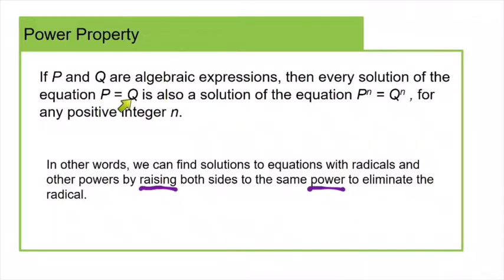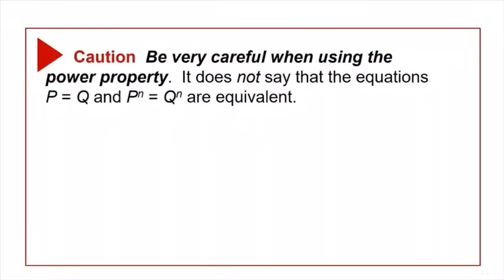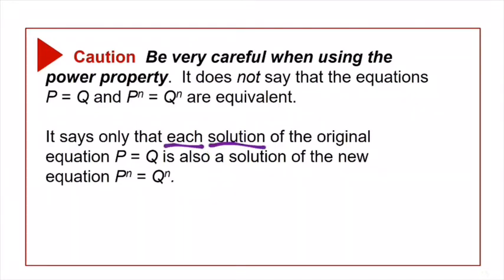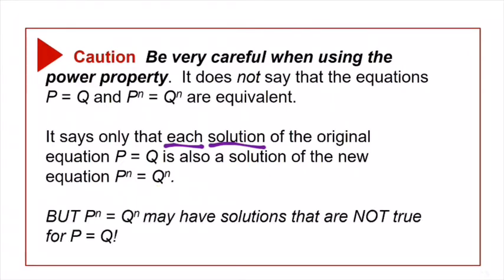If P and Q were both radical expressions and we square both sides of the equation, that's going to get rid of the radical. This is telling us that anything that was a solution of the original equation will also be a solution of the new equation that won't have any radicals. But we have to be careful because the power property does not promise us that these two equations are exactly the same. It only says that each solution of the original equation will also be a solution of the new equation.